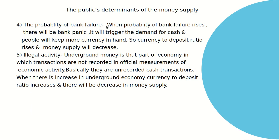Probability of bank failure: when the probability of bank failure rises, there will be a bank panic, triggering demand for cash. People will keep more currency in hand, so the currency-to-deposit ratio rises and money supply will decrease. During a crisis, people always want to keep currency in hand. Illegal activity — the underground or black economy is that part of the economy where transactions are not recorded in official measurements. These are unrecorded cash transactions. When there is an increase in the underground economy, the currency-to-deposit ratio increases and there will be a decrease in money supply.